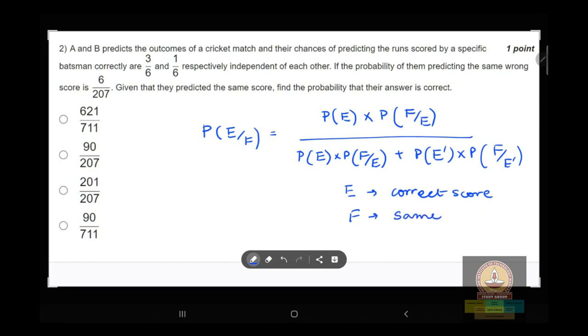Okay, so what we have to find is given same score. It is given that it is a conditional probability that the same score is same and the answer is to be correct. To find the probability of the answer to be correct, P(E|F), like P of E when F occurs, it is given that F occurs.